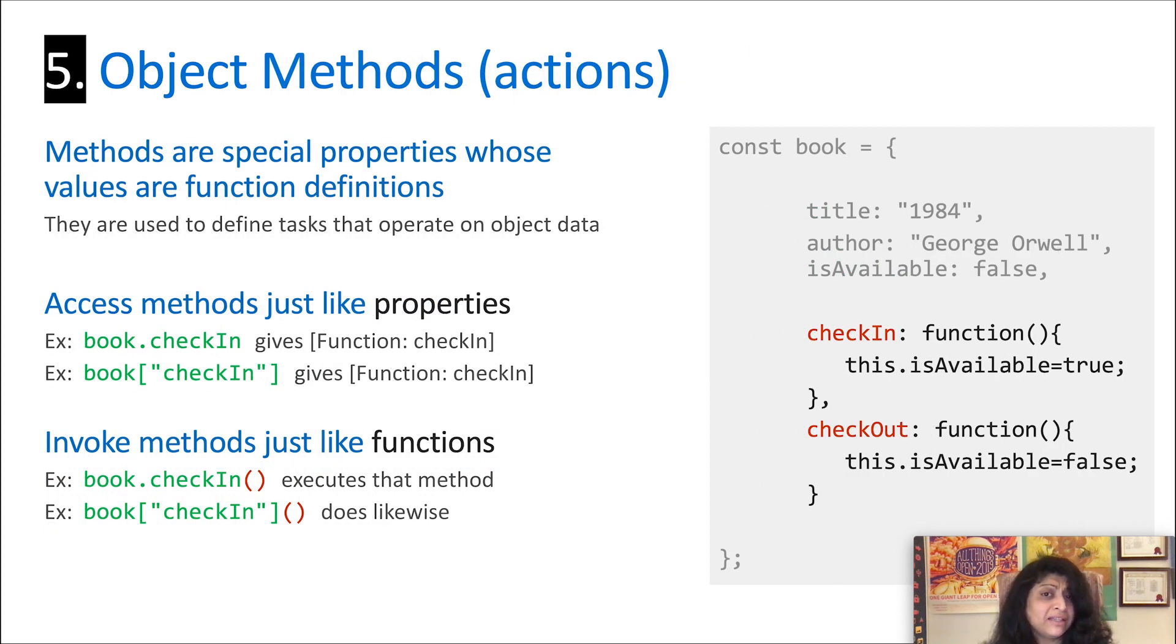Remember we also talked about methods. Methods are simply special properties whose values are function definitions associated with that object. If you look at the two examples here in red, check-in and check-out. Because methods are special properties, you can access the method definition exactly the same way, using either the dot notation or the bracket notation. So book dot check-in will return you the function object. Book square brackets check-in will also return you the function object associated with the definition of check-in.